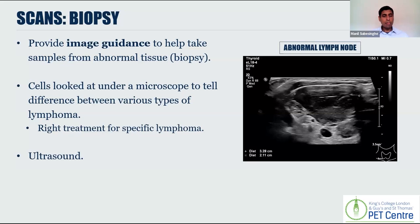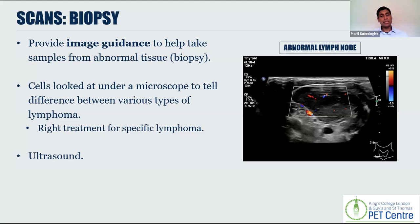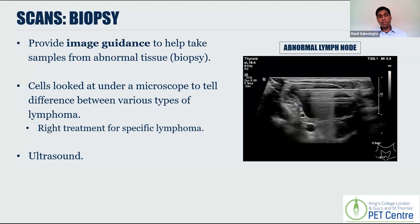We can use ultrasound to help guide taking a sample of tissue. This is an example of an ultrasound of a person's neck, showing about a three-centimetre node in their right neck. We can assess how much blood is going to this lymph node, which helps us anticipate complications such as bleeding, and also identify any important structures nearby like major blood vessels to avoid. Importantly, with ultrasound we can also visualize the needle really well, making sure we get a good sample that will give us the right answer when sent to the labs.